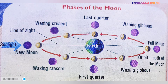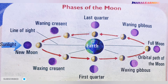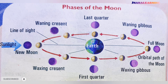When the position of the earth comes in between the sun and the moon, the side of the moon towards the earth is seen fully illuminated, and it is called a full moon.